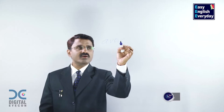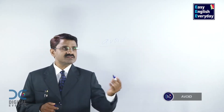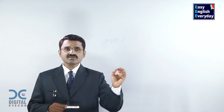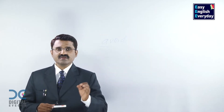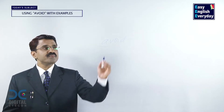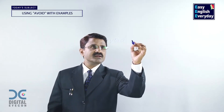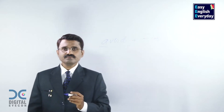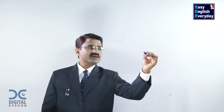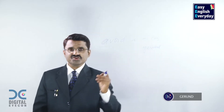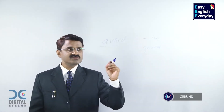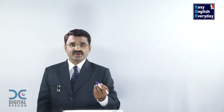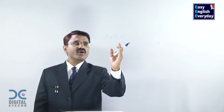Have you heard about this word called 'avoid'? Of course, you must have heard about it. Avoid — what does it mean? Avoid means: don't do it, stay away from it. Now, to the right side of 'avoid', English grammar allows you to keep an -ing form, and the same English grammar calls it a gerund — G-E-R-U-N-D, gerund. And to the left side of 'avoid', you keep a subject. For example: I avoid backbiting.